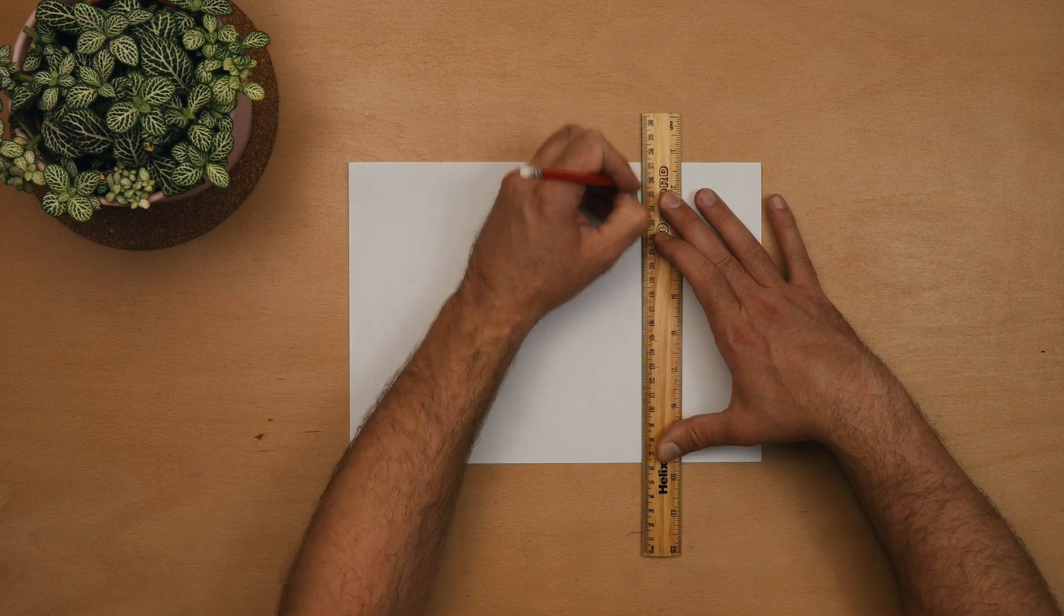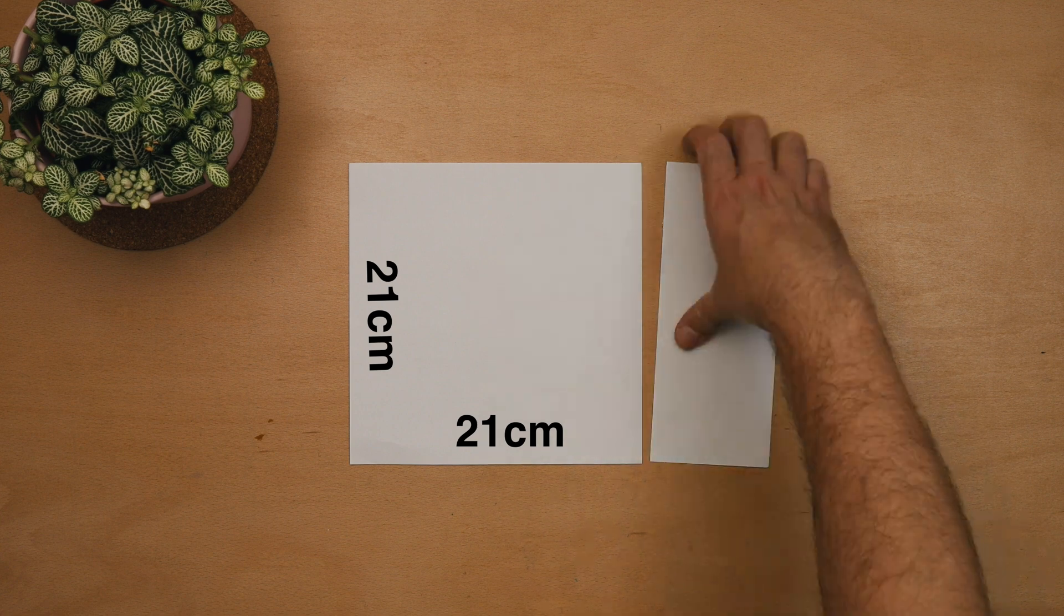Grab some A4 paper and cut it into a 21 by 21 centimeter square and of course these can be pre-cut if you want.